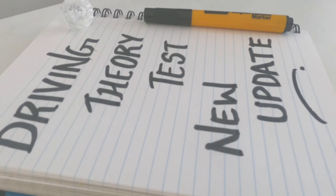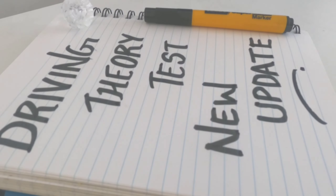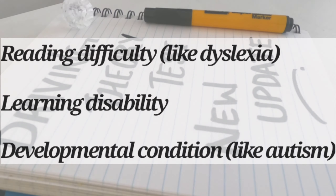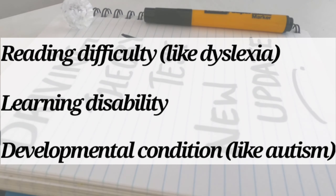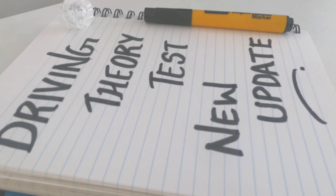So why is the new format of Theory Test changing? The change will make the Theory Test more accessible, especially to people with a reading difficulty like dyslexia, learning disability, and developmental conditions like autism. The change only applies to the car Theory Test to begin with. This change was due to happen on 14th April 2020 but was postponed due to coronavirus.